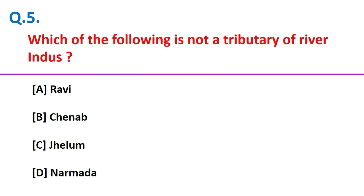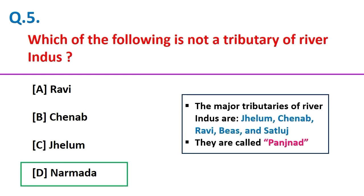Which of the following is not a tributary of river Indus? Narmada. The major tributaries of river Indus are Jhelum, Chenab, Ravi, Beas and Sutlej, and they are together called Panchanad.